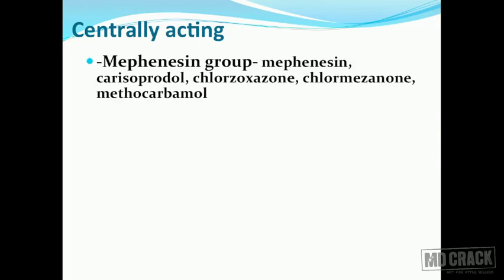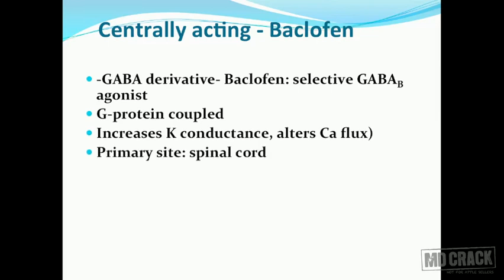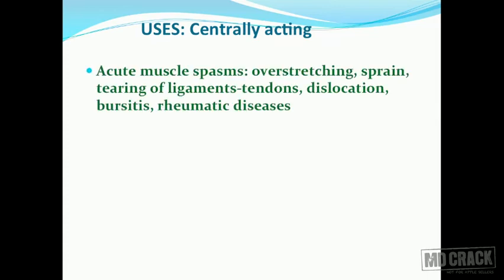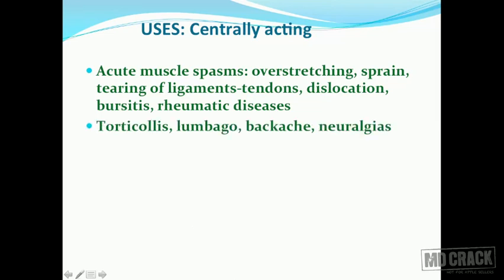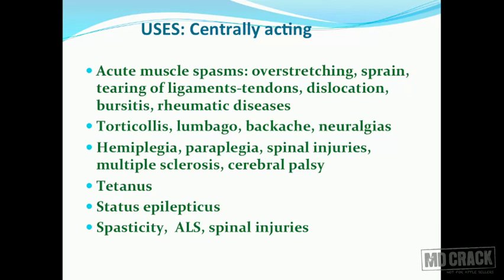The centrally acting skeletal muscle relaxants include the mephenesin group, benzodiazepines, central alpha-2 agonist tizanidine, and baclofen, which is a selective GABA-B agonist. Baclofen acts by G-protein coupled receptor, increases potassium conductance, and alters calcium flux; its primary site of action is the spinal cord. Uses of centrally acting agents: they relax skeletal muscle by central action and are useful in acute muscle spasms, torticollis, lumbago, backache, neuralgia, hemiplegia, paraplegia, multiple sclerosis, tetanus, status epilepticus, and spasticities.